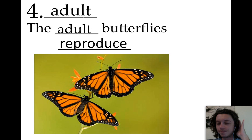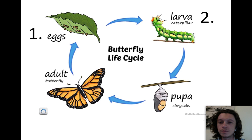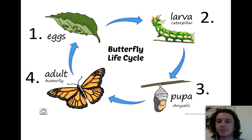This is the butterfly life cycle — a circle. Step one is eggs, which goes to step two, larva or caterpillar, then step three, pupa or chrysalis, and step four, adult butterfly. Then the adult lays eggs, which turns to larva, to pupa, to adult — we see a circle. This is the life cycle.